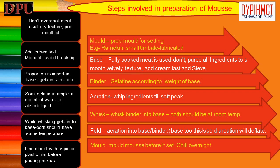Guidelines for preparing mousse: 1. Don't overcook meat as it may result in dry texture and poor mouthfeel. 2. Add cream at the last moment to avoid breaking. 3. Proportion of base to gelatin to aeration is important. 4. Soak gelatin in ample amount of water to absorb liquid. 5. While whisking gelatin into the base, both should have the same temperature. 6. Line the mold with aspic jelly or plastic film before pouring the mixture.